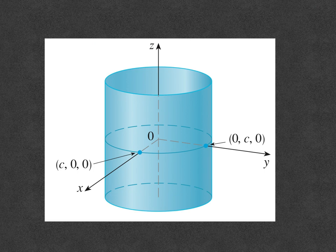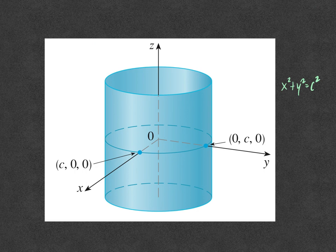Cylindrical coordinates are useful in problems that involve symmetry about an axis, and the z-axis is often chosen to coincide with the axis of symmetry. For example, consider the right circular cylinder with Cartesian equation x squared plus y squared equals c squared. In cylindrical coordinates, the cylinder has a very simple equation: r equals c. Since r squared equals x squared plus y squared, then r squared equals c squared, so r equals c. That's very nice and easy to work with.